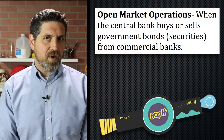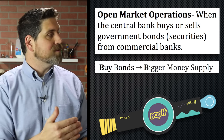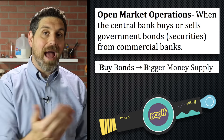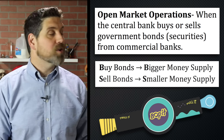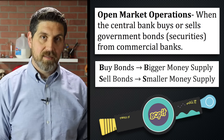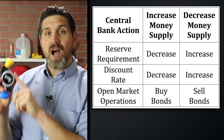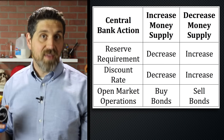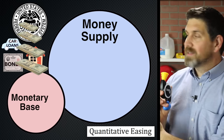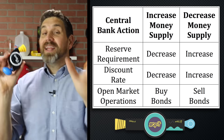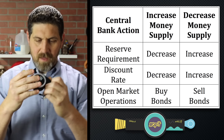Here's a trick to help you remember: if we want to increase the money supply and make it bigger, then the central bank has to buy bonds. If we want to decrease the money supply and make it smaller, the central bank is going to sell bonds. In addition to these three ways of changing the money supply, there are others like quantitative easing — that's when the central bank buys assets other than bonds like mortgages or car loans. But these are the three that you definitely have to know. Bop it.